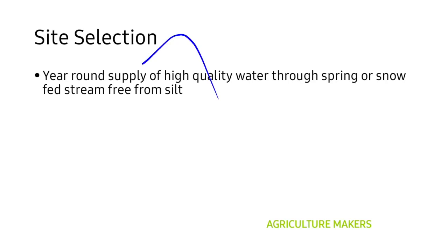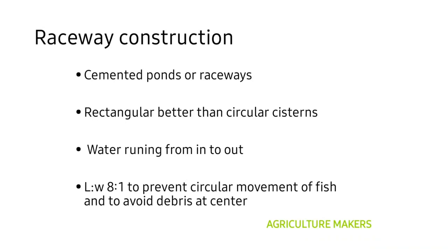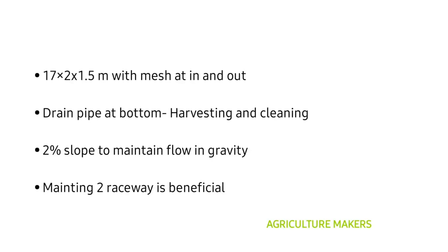For the cultivation of trout, cemented ponds or raceways should be constructed. These should be rectangular in nature as they are better than circular systems. There should be a provision for inlet and outlet so that there is continuous flow of water. The length-to-width ratio requirement is 80 to 1, to prevent the circular movement of fish which may lead to the deposition of debris at the center of the raceway.